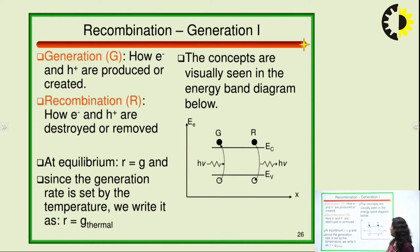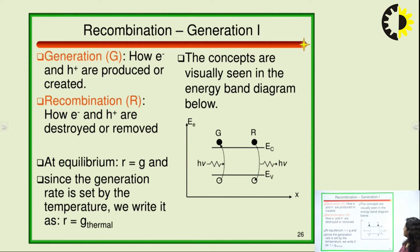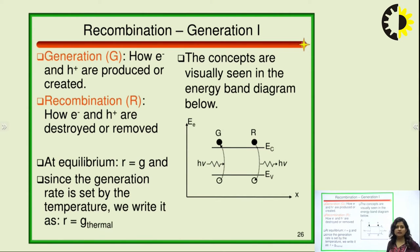In lasers, electrons in the valence band absorb some form of light and jump to the conduction band. This technique by which we excite light onto the electron in the valence band is called pumping. With the help of this pumping, electrons move from valence band to conduction band. In the case of the laser — light amplification by stimulated emission and radiation — electrons in the conduction band move spontaneously or stimulatedly into the valence band.